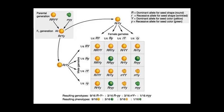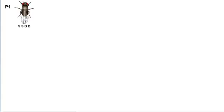Here we have a true breed straight wing and black body mated with a true breed curly wing and gray body.